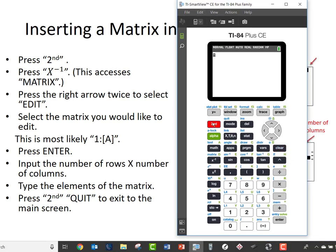press 2nd. And again, I'm on the home screen, so pressing 2nd, then press x to the negative 1. This acts as the matrix menu. Press the right arrow twice to select edit. Once I'm under edit, I'm going to select the matrix that I would like to edit. This is most likely 1 for matrix A.